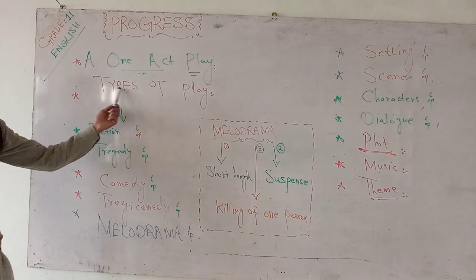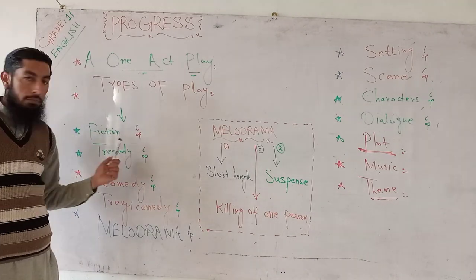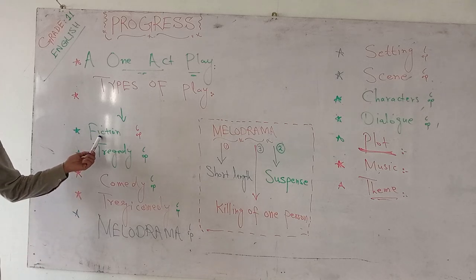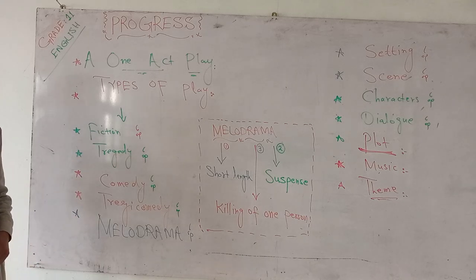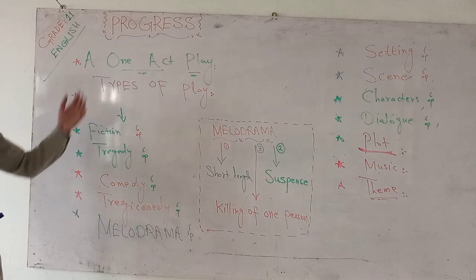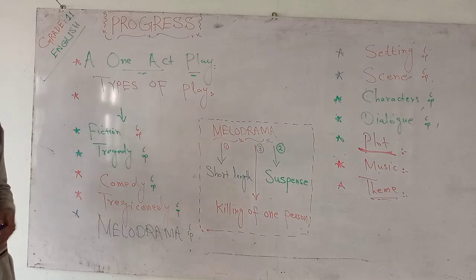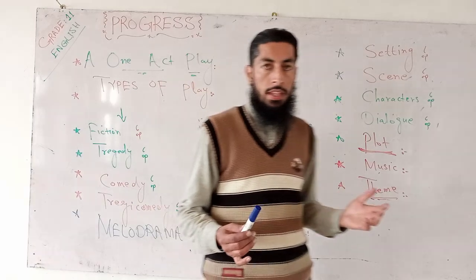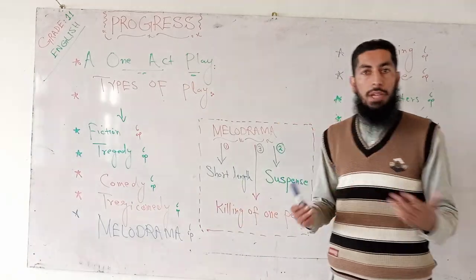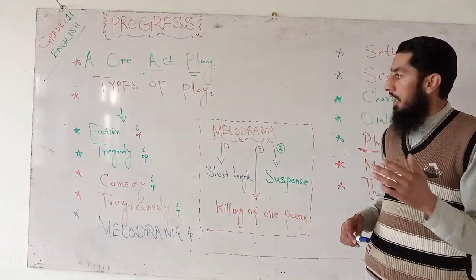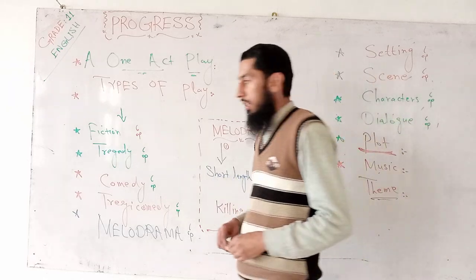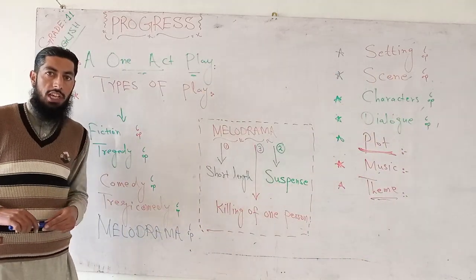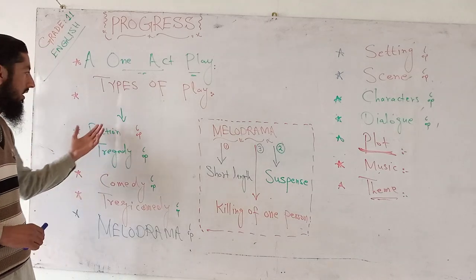Let's come to types of play. First is fiction. Fiction — whether novel, drama, or play — is a fabricated story, a man-made story based on imagination. In English literature, you have a lot of plays, dramas, and novels based on fiction and imaginative stories.